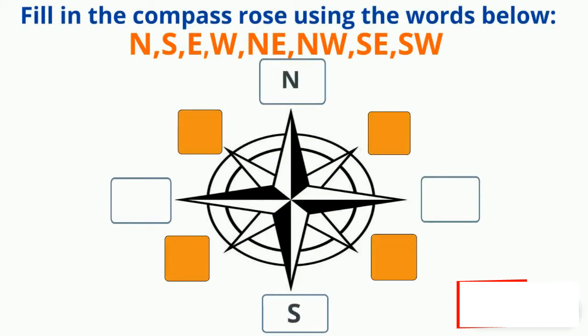So we have north, south, east, west. Very good. We also have northeast, northwest, southeast, and southwest.